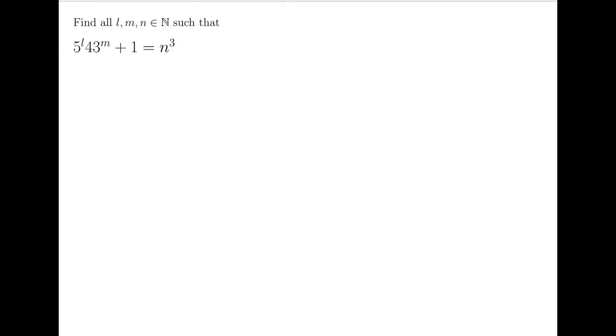Let's take a look at this problem taken from the 2012 Korea Junior Mathematical Olympiad. It says, find all natural numbers L, M, and N, such that 5 to the L times 43 to the M plus 1 equals N cubed.